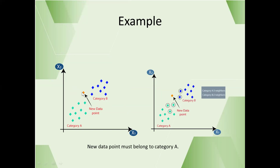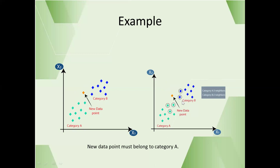I have to decide the category for the new data point according to the k-nearest neighbor algorithm. Let us assume the value of k is 5 for this example. I have to find out the 5 closest data points to the new data point by measuring the distance between the new data point and all other data points in the graph. Based on the distance, I identified the 5 closest data points, as shown in the second graph.